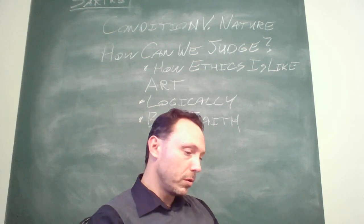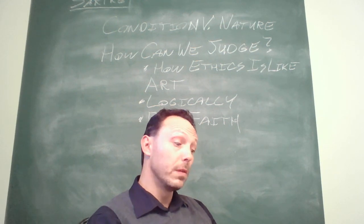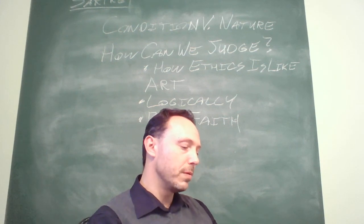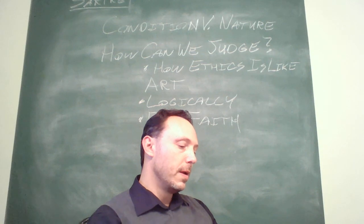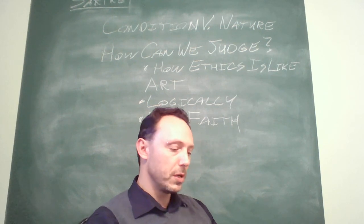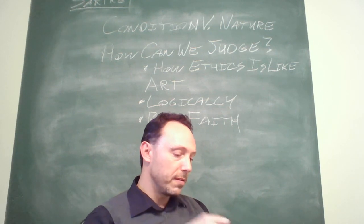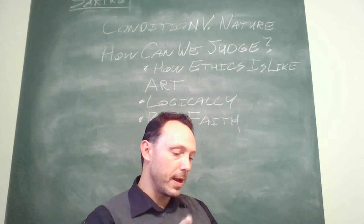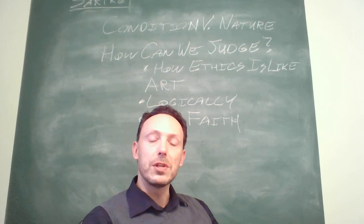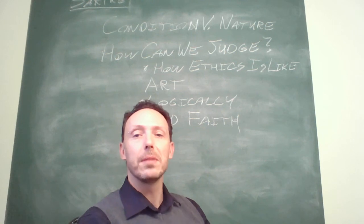Sartre continues here: Historical situations vary. Man may be born a slave in a pagan society or a feudal lord or a proletarian. What does not vary is the necessity for him to exist in the world, to be at work there, to be there in the midst of other people, and to be mortal there. These limits are neither subjective nor objective, or rather they have an objective and a subjective side. Objective because they're to be found everywhere and are recognizable everywhere. So no matter what a person's situation is, we recognize these features of human existence that everybody is dealing with.